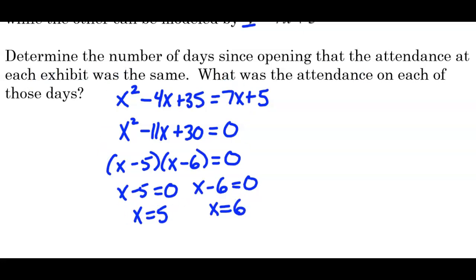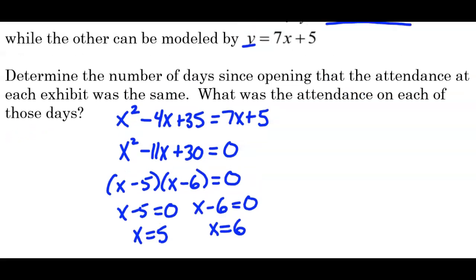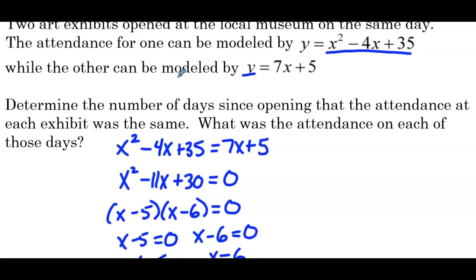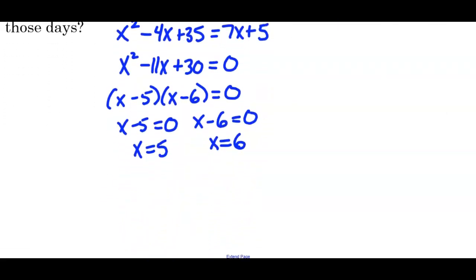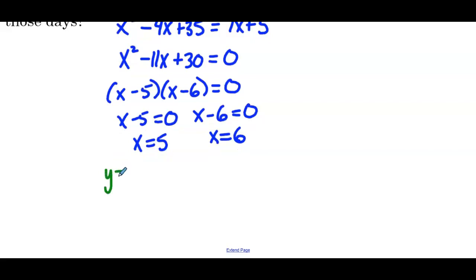Now they do ask what the attendance was on each of those days. Well, since the attendance is the same at both, we'll pick the easier model to plug into, which is the linear, y equals 7x plus 5. So here to find the attendance, we'll have 7 times 5 plus 5. So y is 35 plus 5, which is 40. And on day 6, we'd have y equals 7 times 6 plus 5. So y equals 42 plus 5, which is 47.